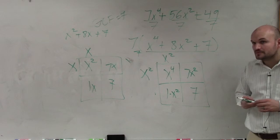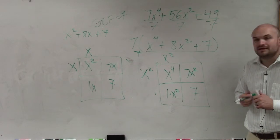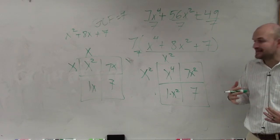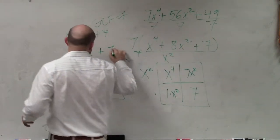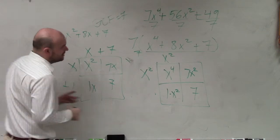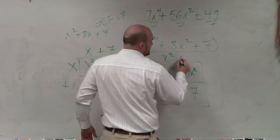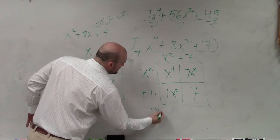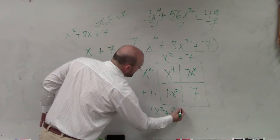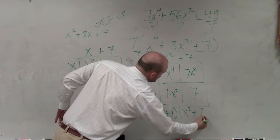Does that make sense? Yes, but can I do the other way instead of the boxes? I don't care how you do it. What I want you to understand is that the two factors are not going to be x plus 7 and x plus 1. The two factors are now going to be x squared plus 7 and x squared plus 1. So when I say factor, it's going to be x squared plus 1 and x squared plus 7.